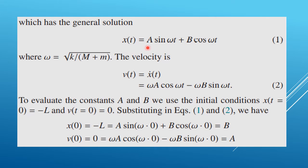The general solution is x(t) = A sin(ωt) + B cos(ωt), where ω = √(K/(M + m)). The velocity is found by differentiating the position equation, giving v(t) = ẋ(t) = ωA cos(ωt) − ωB sin(ωt).